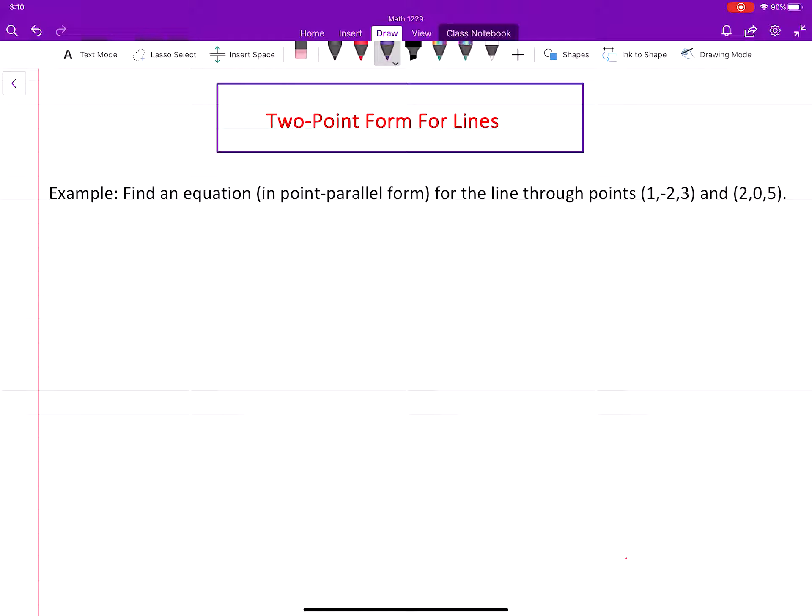So let me call the first one P, the second one Q. One thing that we always need to check is, do we have a point? Yes, we have more than one, but I'll choose to use only this one.